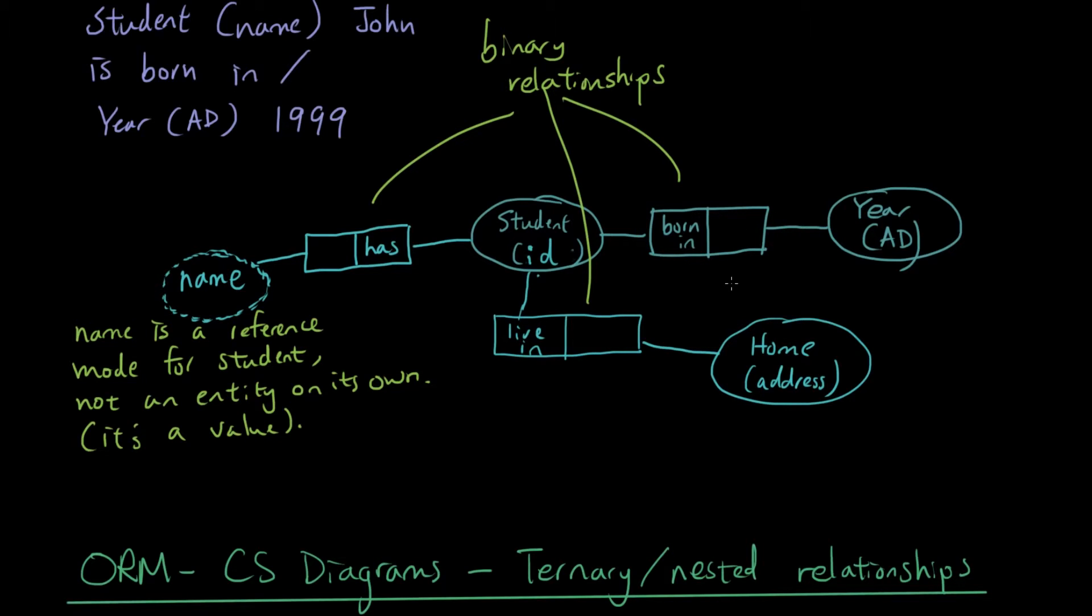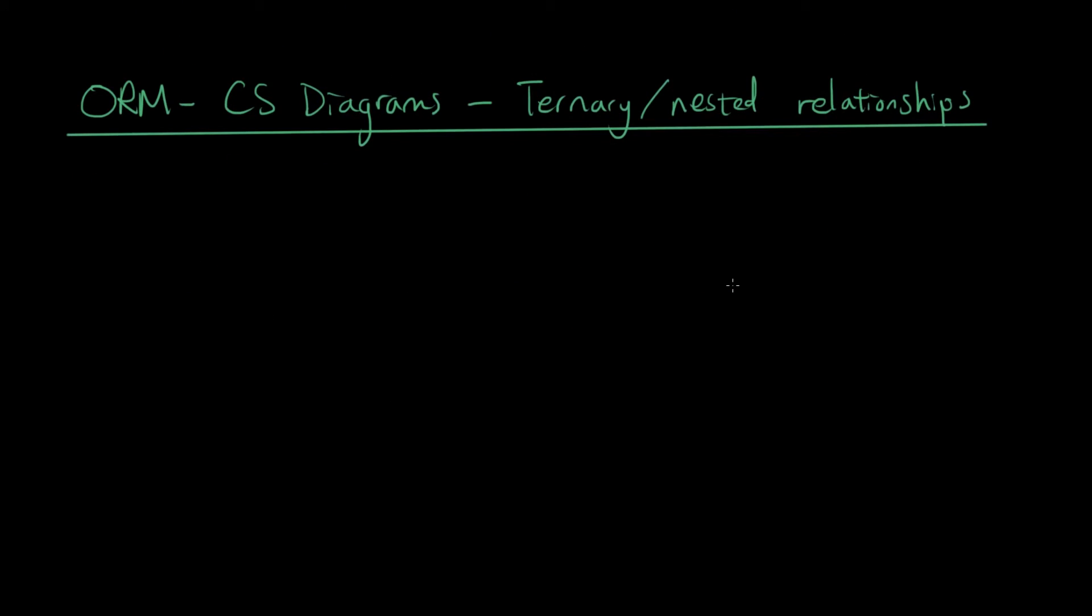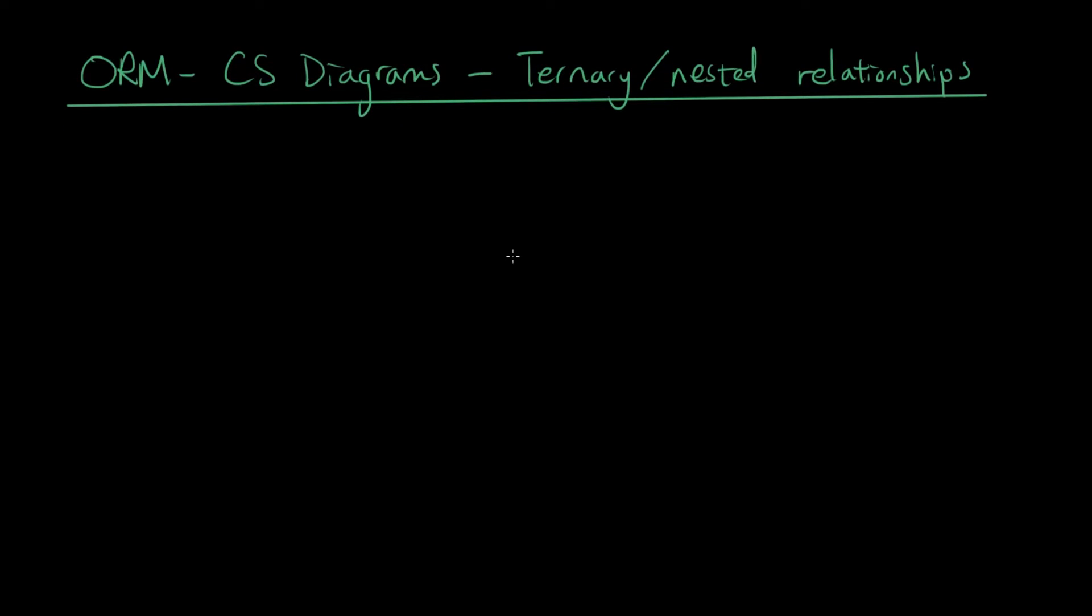Now what happens when you have three or more entities? Well, if you have three entities it's called a ternary relationship. Let's write the elementary sentence for it first before we draw the diagram. So let's have a look at this elementary sentence: Teacher has degree from university.